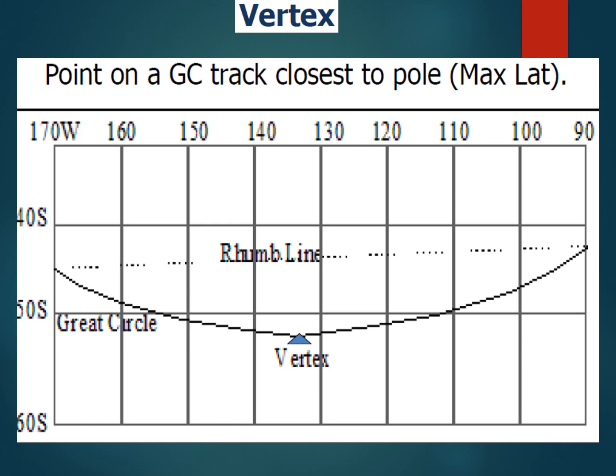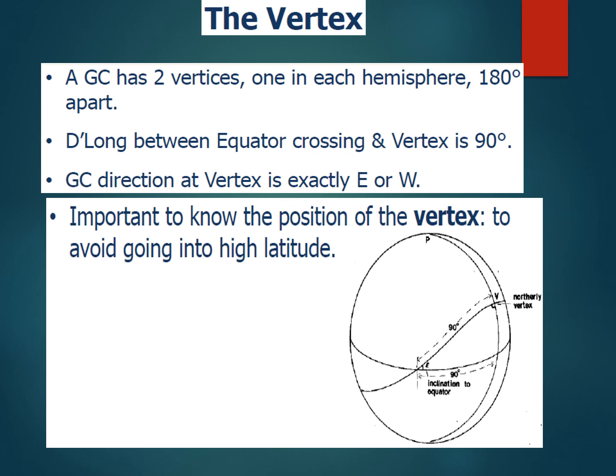Every great circle or arc of a great circle has a point called the vertex. I have previously shown how to calculate the vertex. A great circle will have two vertices, one in each hemisphere, 180 degrees apart. The difference in longitude between the equator crossing and the vertex is 90 degrees, as you can see in the figure. The great circle direction at the vertex is exactly east or west.